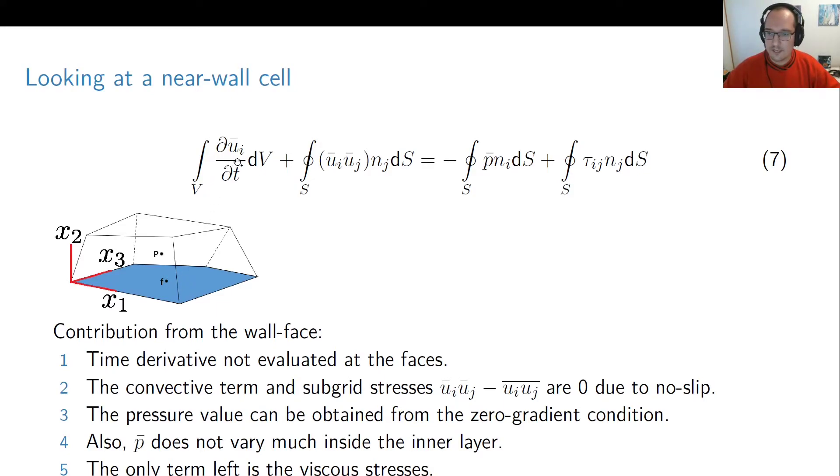So the time derivative is not going to be evaluated at the face, it's going to be evaluated at the cell center which we call P here so we don't have to think about it. Now the convective term is going to be zero at the wall face due to the no slip boundary condition. And the same can be said about the subgrid stresses because they're also going to be zero due to the no slip.